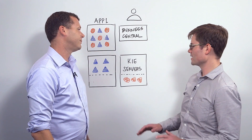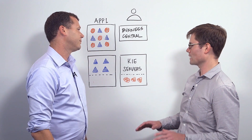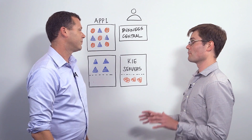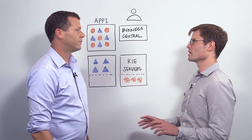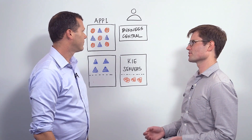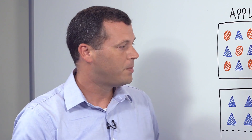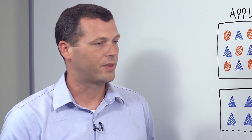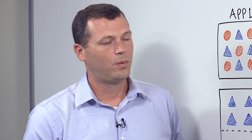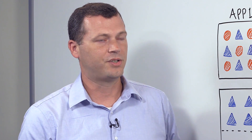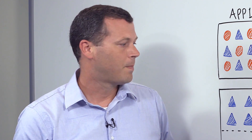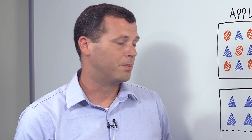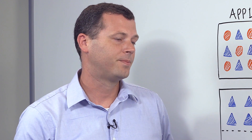So now I have my rules in my KIE server. How does the application interact with that KIE server? There are two main ways: one is the Java API, and another is the REST API provided by the KIE server.